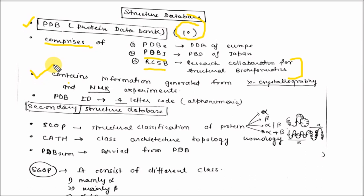The secondary structure database is SCOP (Structural Classification of Protein). In SCOP, they classify the structural classification of protein in four parts: alpha, beta, alpha by beta, and alpha plus beta. The second secondary structure database is CATH (Class Architecture Topology Homology). The third is PDBsum, derived from PDB.